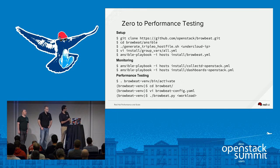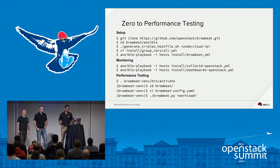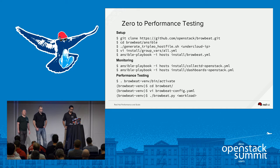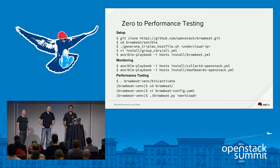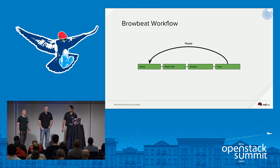Zero-to-performance testing. There are about 10 steps on this slide, but most of them you can actually neglect because they're just changing directories and editing configuration files. You can pretty much get to zero-to-performance testing in these 10 steps. You set up BrowBeat, edit an Ansible-based VARS file that tells where your Elasticsearch instance is, where your Graphite and Grafana are. Then you set up monitoring by running a couple of playbooks - it installs Collectd across the nodes and uploads the dashboards to Grafana. Then you edit a config file with all the workloads, enable what you want, disable what you don't, and jump right into performance testing.